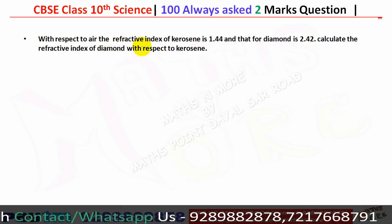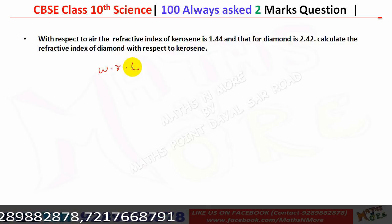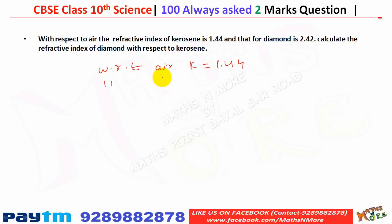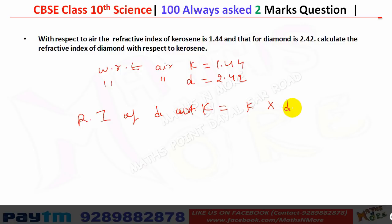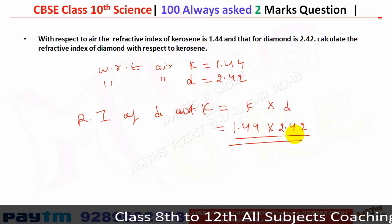With respect to air, the refractive index of kerosene is 1.44 and the refractive index of diamond is 2.42. To calculate the refractive index of diamond with respect to kerosene, multiply the two values: 1.44 × 2.42 gives the final answer — do the calculation yourself.